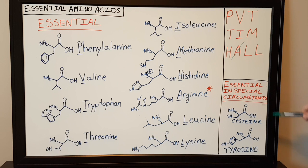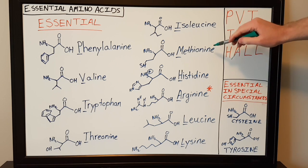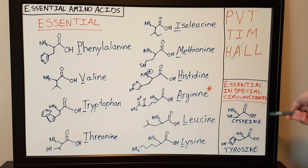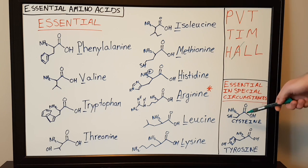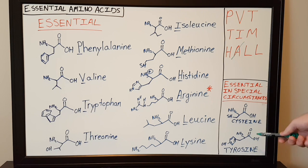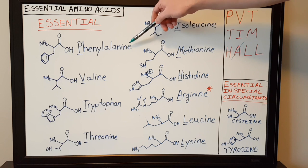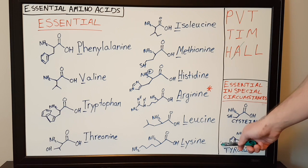A couple of other amino acids that are only essential in certain circumstances are cysteine and tyrosine. Cysteine is only essential when you don't get an adequate amount of methionine in your diet, because cysteine is formed from methionine — methionine donates its sulfhydryl group to cysteine. Tyrosine becomes essential if you don't get an adequate amount of phenylalanine, because tyrosine is essentially phenylalanine with a hydroxyl group attached to it.